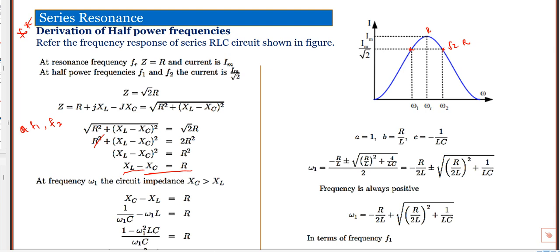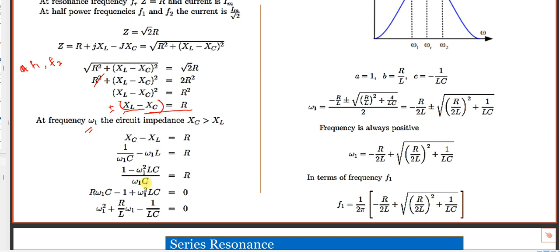From the frequency response, X_L = ωL is directly proportional to frequency and X_C = 1/ωC is inversely proportional. At lower frequencies, X_C is greater than X_L. So at f1, X_C > X_L, giving −R = X_L − X_C. At f2, X_L is greater than X_C, so +R = X_L − X_C.